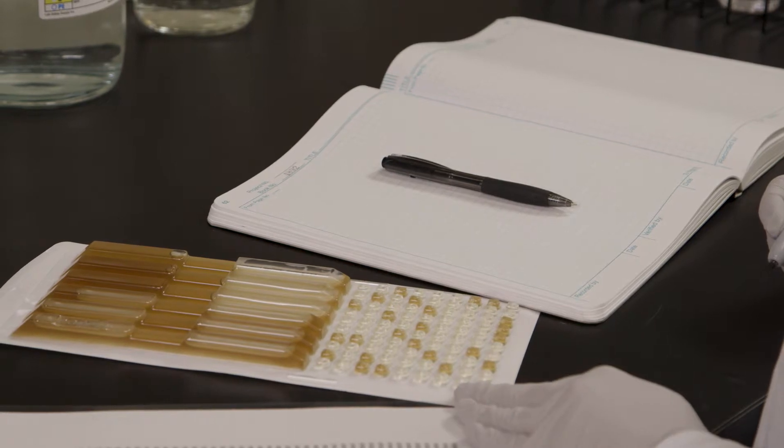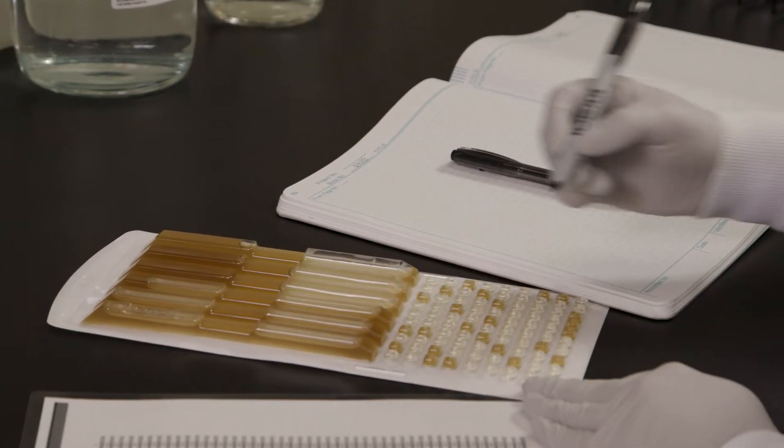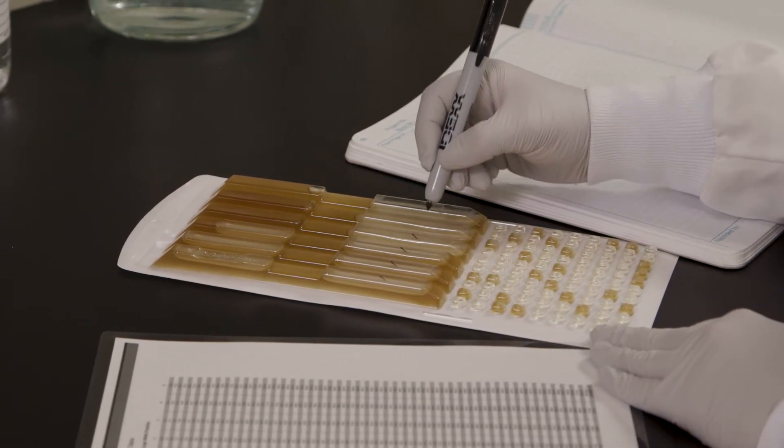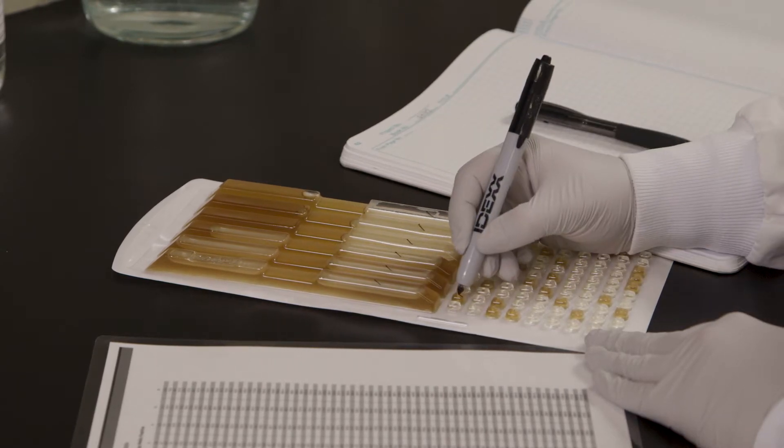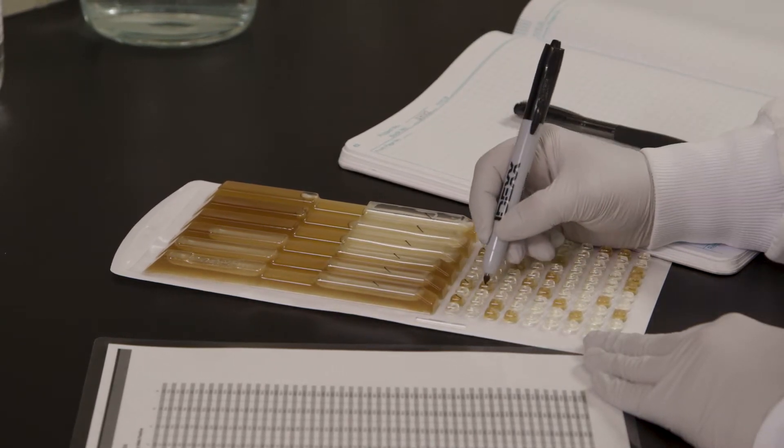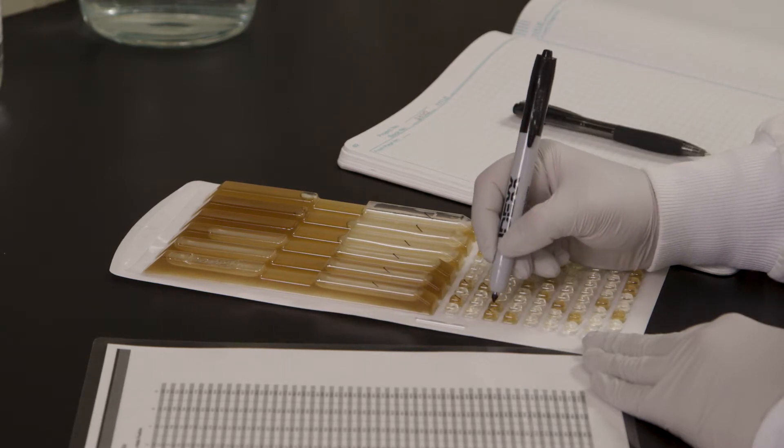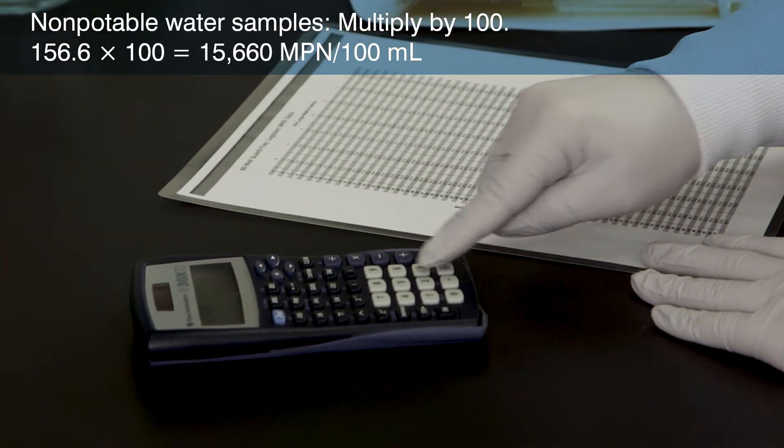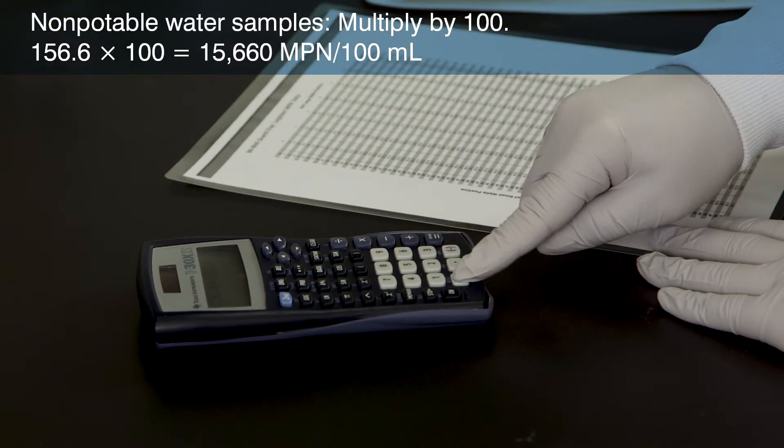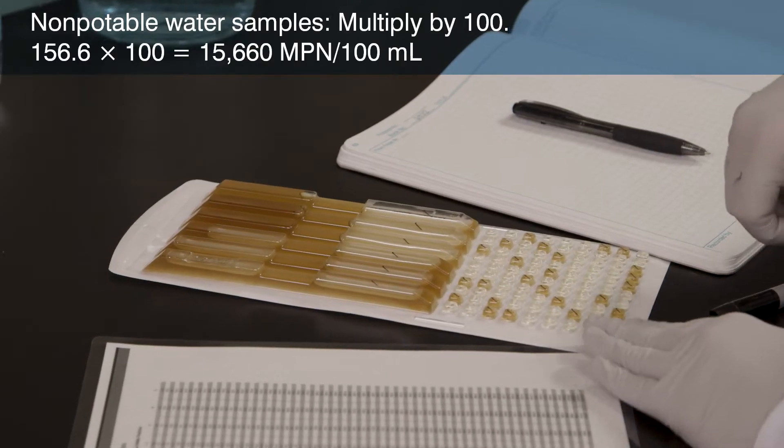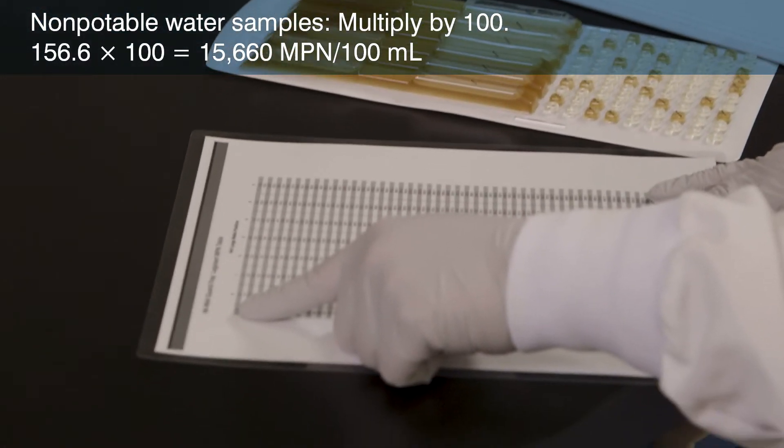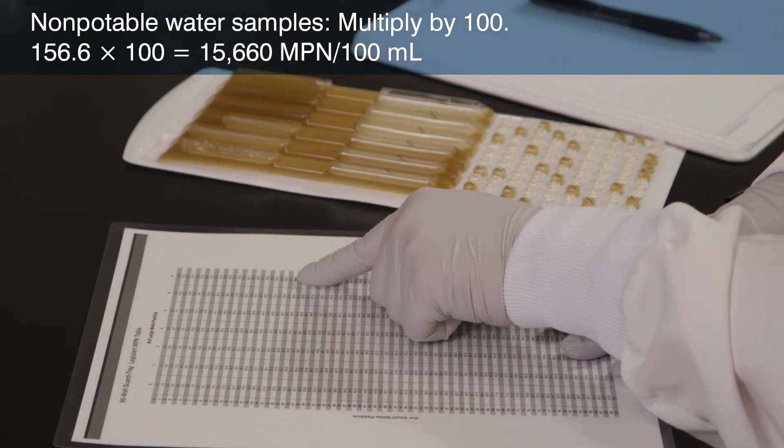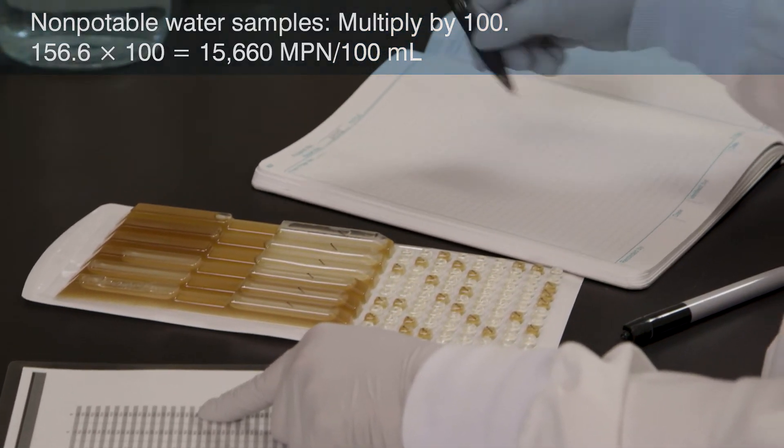After incubation, look for any indication of brown color and or turbidity greater than the negative control which indicates a positive well. Mark each brown or turbid well, count the marked wells and then refer to the MPN table included with the Quantitray LEGALERT trays. To obtain the MPN per 100 mL, remember to multiply the MPN by 100 because you are using 1 mL of the original sample. The most probable number for this non-potable water example is 156.6 multiplied by a dilution factor of 100 to achieve 15,660 per 100 mL.